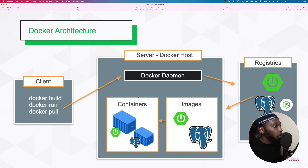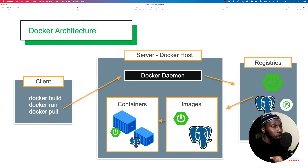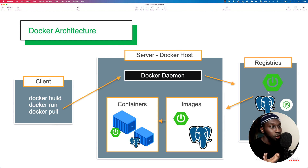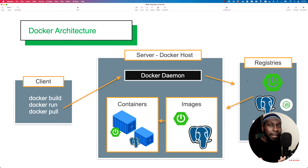So a Docker registry — remember from the slides — we have the client, we have the server which is the Docker host, and then we have the Docker registries. This is where the images are kept. You've seen that we've used an Nginx image. If we want to have our own images stored in a Docker registry, we can do it. So this is what we're going to learn in this video.